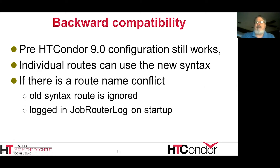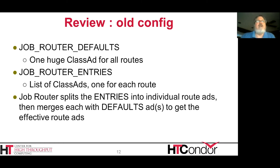We're still backward compatible — if you have an old-style job router config, it will work the same way it did before. You can also use the new configuration for individual routes, deploying the improved configuration one router at a time. If you have routes in both the old and new config with a name conflict, we'll ignore the one in the old config. In the old config there are basically two knobs: job_router_defaults, where most of the CE boilerplate lives and is common to all routes, and job_router_entries, which is a list of class ads each representing a route. Each route entry is merged with the entirety of job_router_defaults to become your effective route ad.